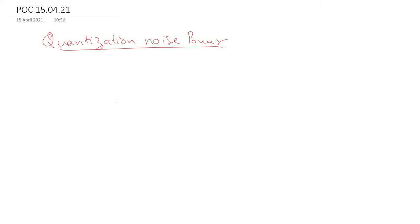Continuing from the previous lecture, we've seen that in the case of PCM, the maximum quantization error is delta by 2, where delta is the step size. This is half of the step size and represents the maximum quantization error a PCM system can have.